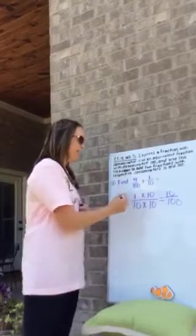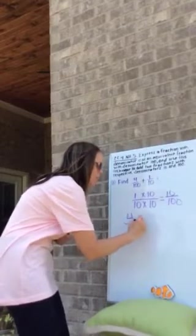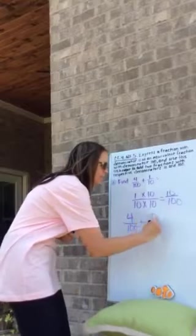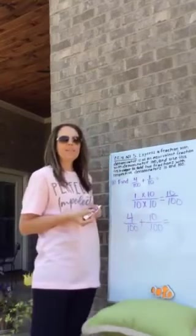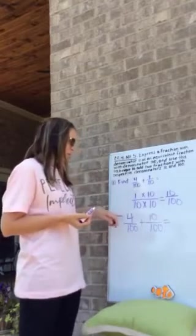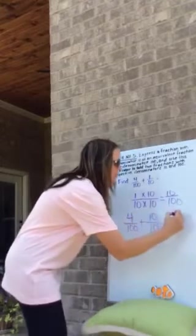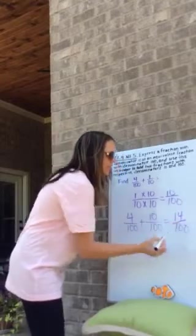So now we can take our four hundredths plus ten hundredths and add the fractions. Four plus ten is fourteen hundredths.